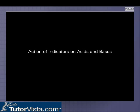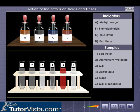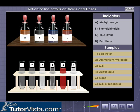Action of Indicators on Acids and Bases. Here are four bottles labelled A, B, C and D, each containing the indicators methyl orange, phenolphthalein, blue litmus and red litmus. Here are six test tubes containing different samples. The samples are listed on the right-hand side.